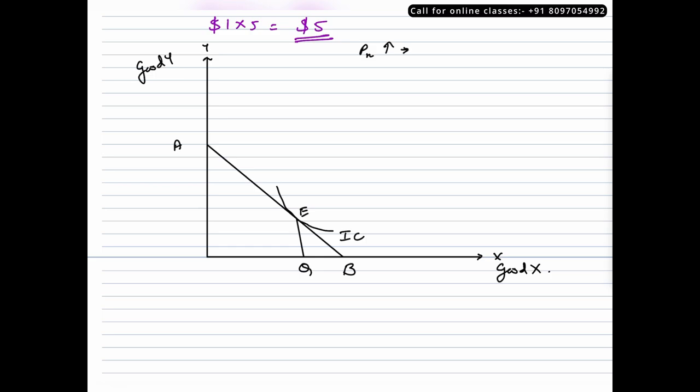Now when the price of commodity X increases, what will happen to the budget line? The budget line will rotate inwards on the X axis. Let us say this is the budget line AB1. Now since price of X has gone up, will the consumer buy same quantity? No, he will have to reduce the quantity of commodity X because it is relatively expensive.